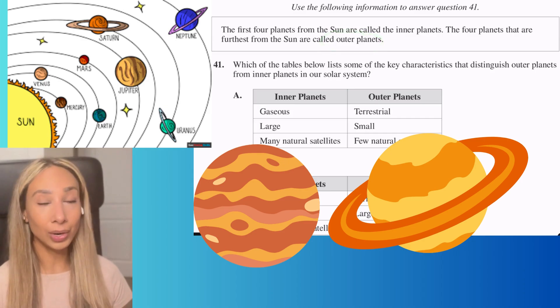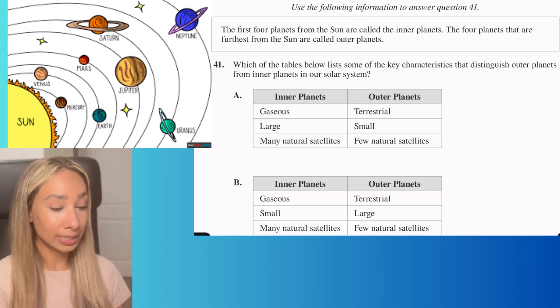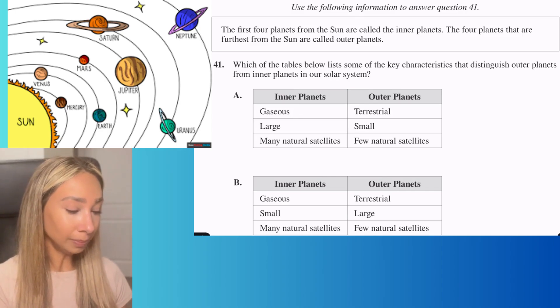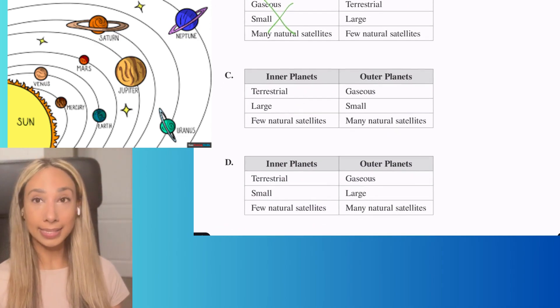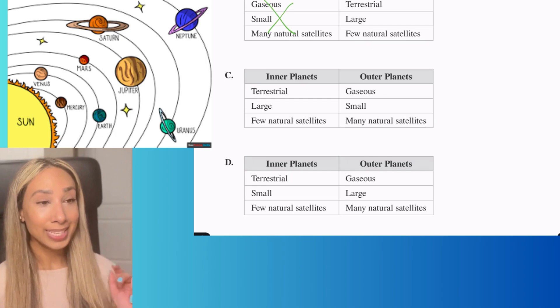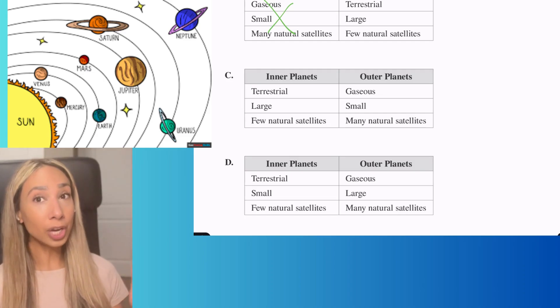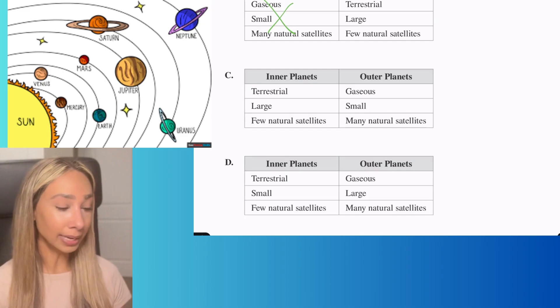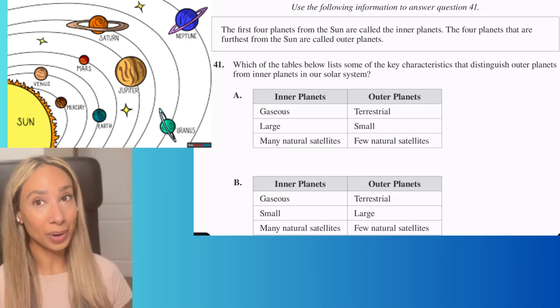I know Earth, Mars, and Venus are closer to the Sun, so they're my inner planets. That means options A and B won't work because we have terrestrial planets as inner planets. Our other planets are gaseous. Jupiter is one of the biggest planets in the solar system, so gaseous planets are probably larger, meaning option C won't work. Our answer is D.